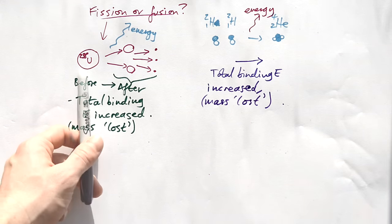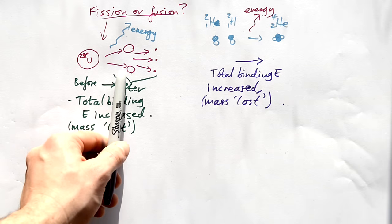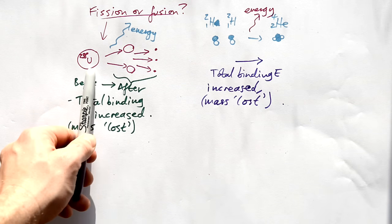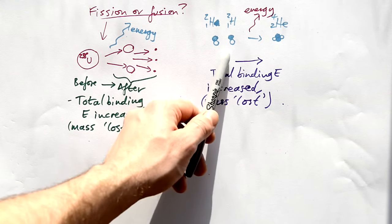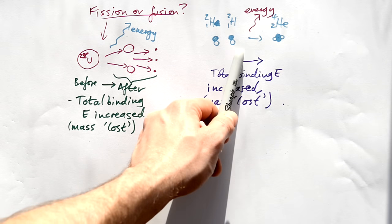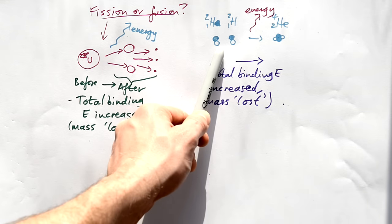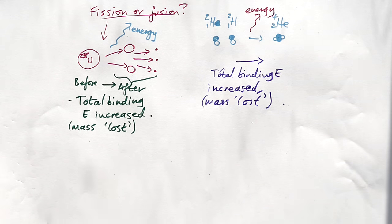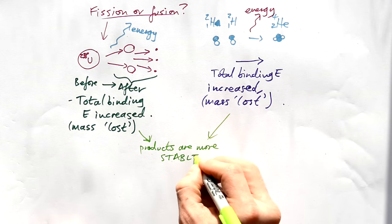Now, what do you notice about uranium? It's very heavy. It's heavier nuclei that will release energy when they are fissioned. If you try and fuse two heavy nuclei together, the problem is that you need to put more energy in to begin with. Same thing here. It's light nuclei that release lots of energy when they're fused together. If you try to fission light nuclei, again, you're having to put in more energy than you're getting out. It's worth saying one last thing. That is to say that if the total binding energy has increased, then that means our products are more stable.